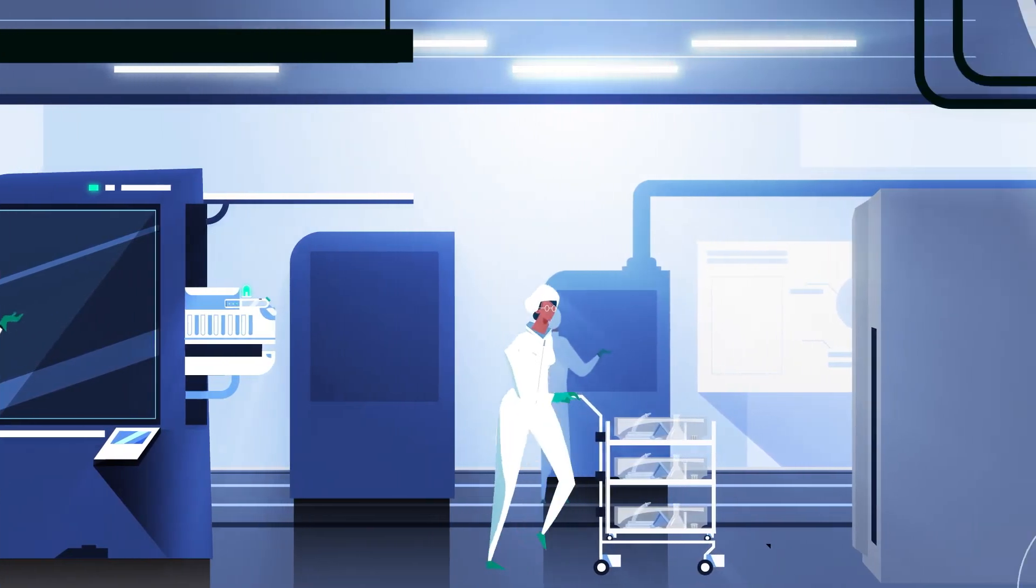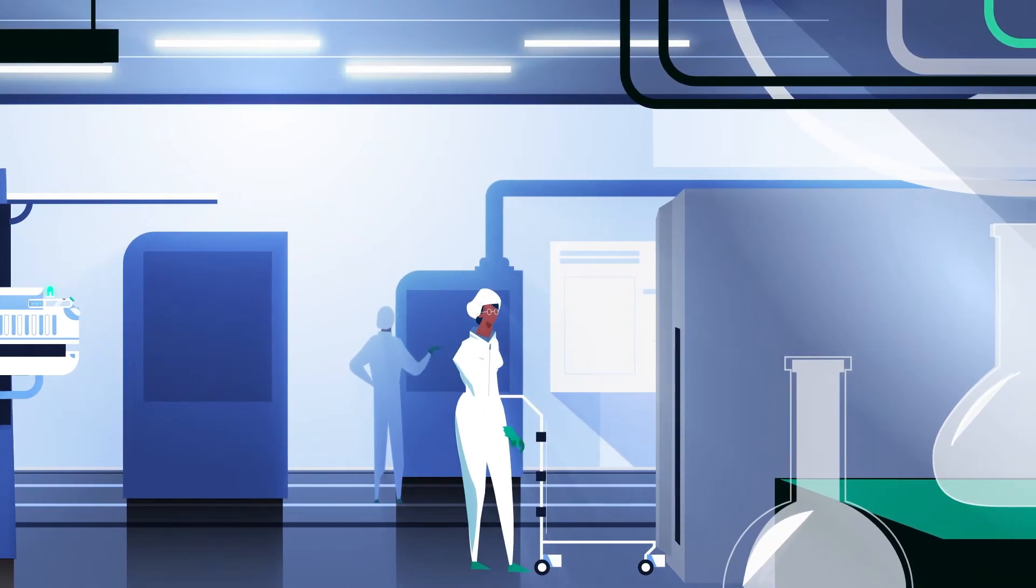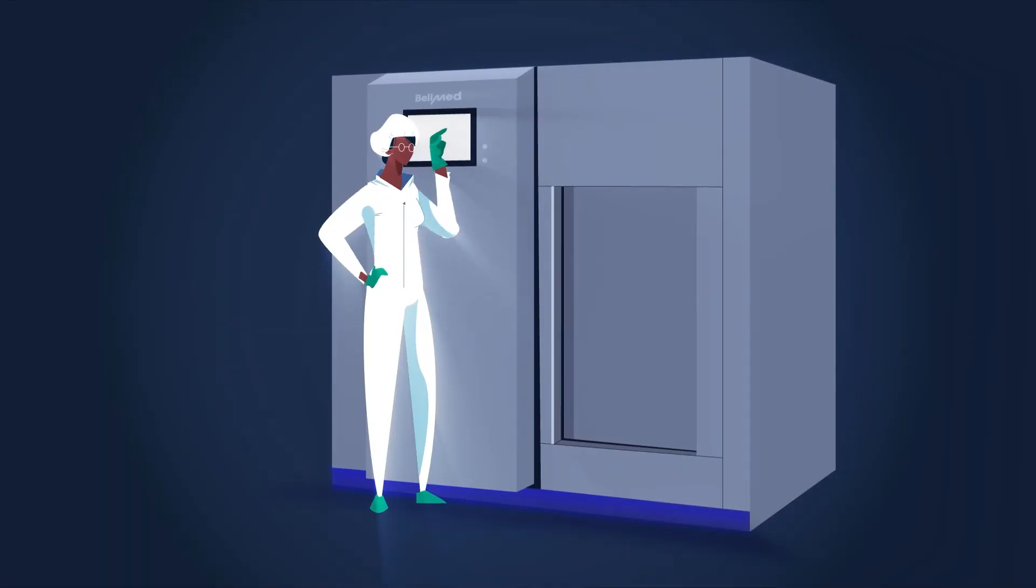The products are placed on the designated trolley, the trolley is pushed into the steam sterilizer, the door is closed, and the appropriate program is selected. And that's what happens next.